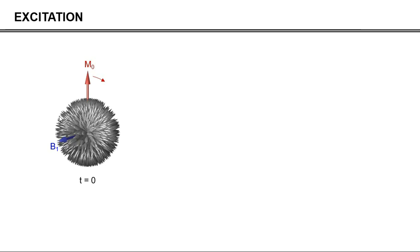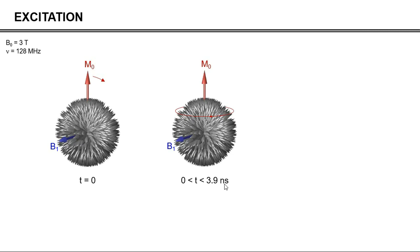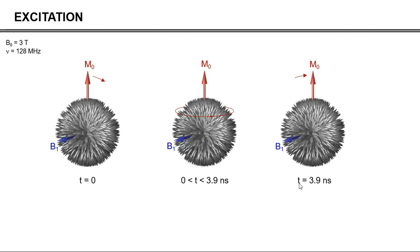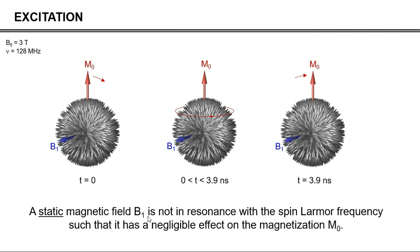Now, suppose that we are at a magnetic field of 3 Tesla, corresponding to 128 MHz for a proton nuclear spin. Therefore, in 3.9 nanoseconds, the entire sphere has rotated by 180 degrees. If the magnetization rotated away from the z-axis during the first few nanoseconds, after the sphere has been rotated by 180 degrees, the magnetization now rotates towards the z-axis. In other words, if we use a static magnetic field B1, we don't really achieve anything, because the B1 field is not in resonance with the spin Larmor frequency. The magnetization will simply wobble back and forth, but will never get a coherent rotation.